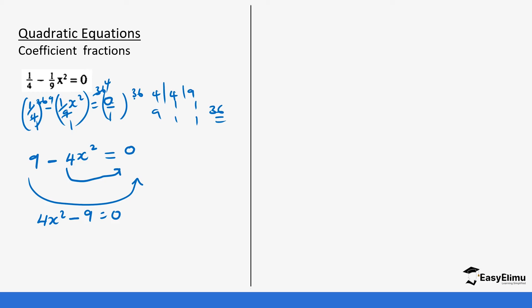I've rearranged the equation to make the work a bit easier. Moving the 9 to the other side gives us 4x² minus 9 equals zero. So now we are working with 4x² minus 9 equals zero. Our product A×B is 4 times negative 9, which gives us negative 36, and our middle coefficient B is 0 since the x term is not given.